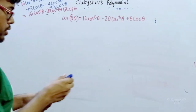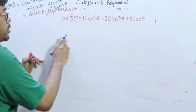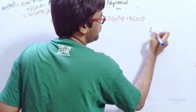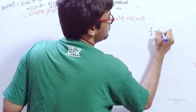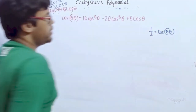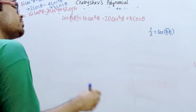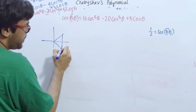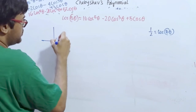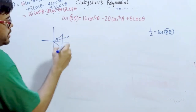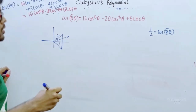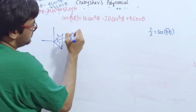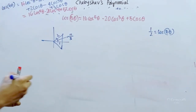Combining terms, cos(5θ) = 16cos⁵θ - 20cos³θ + 5cos θ. Now let's say we want to find when this equals 1/2, i.e., cos(5θ) = 1/2. This means 5θ = π/3, giving us θ = π/15.